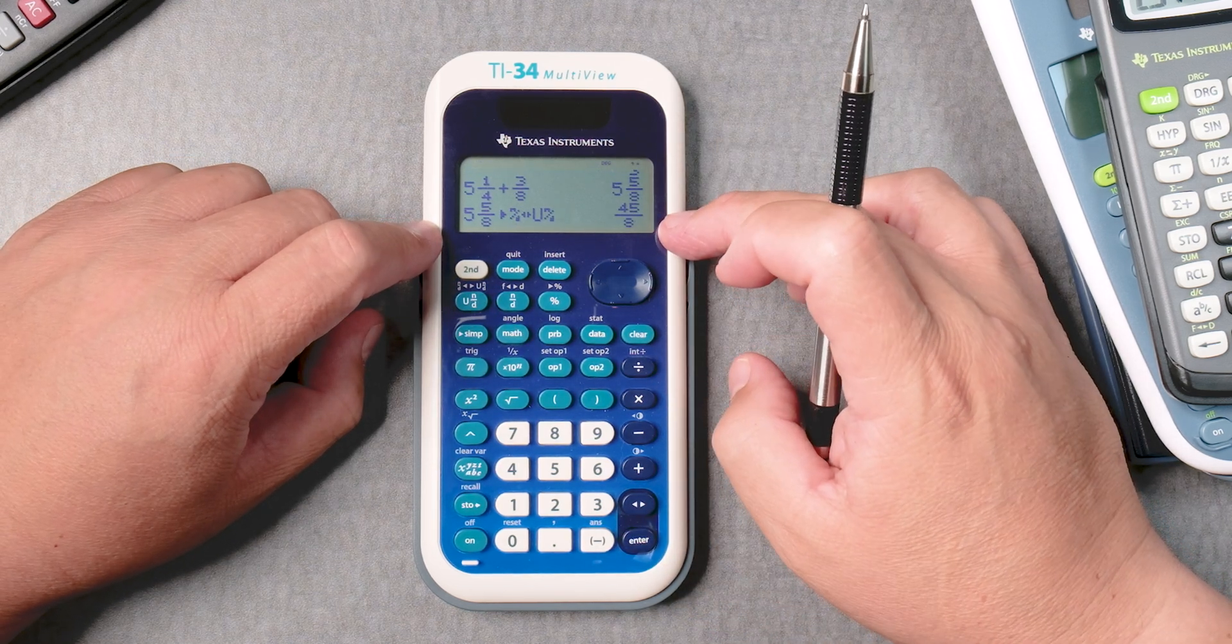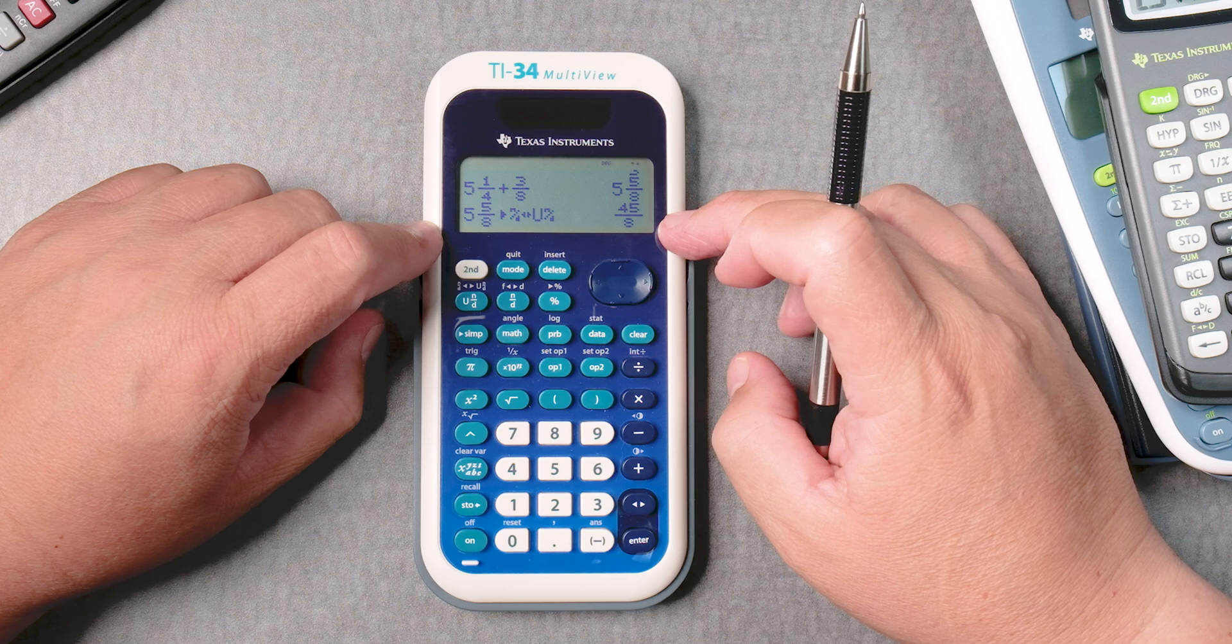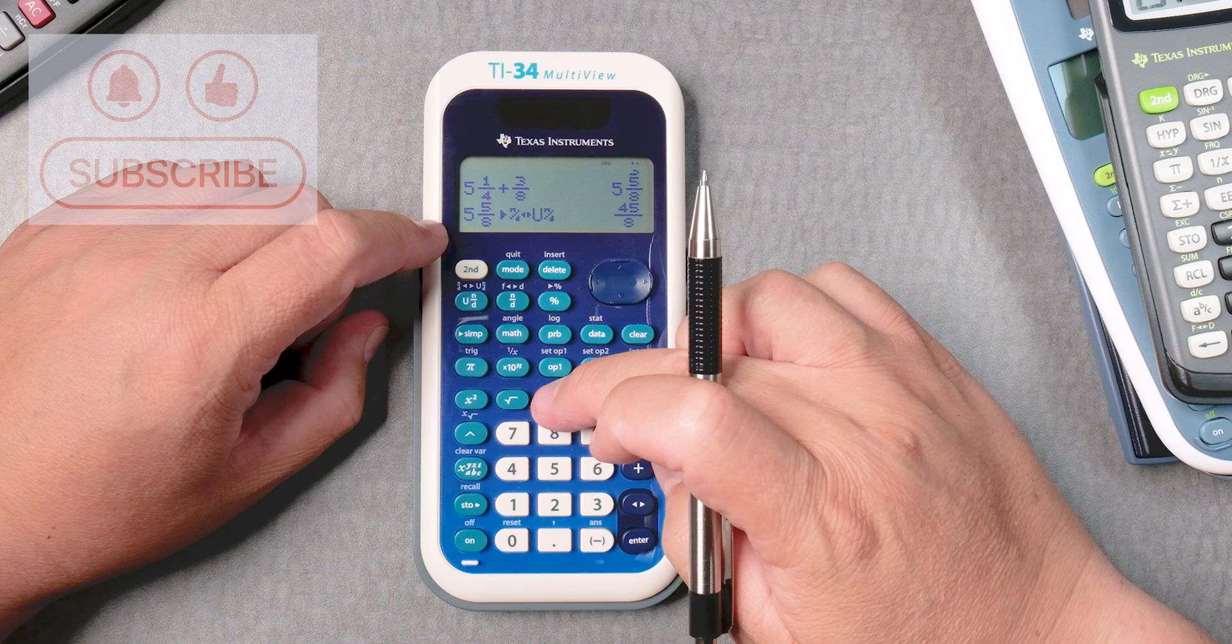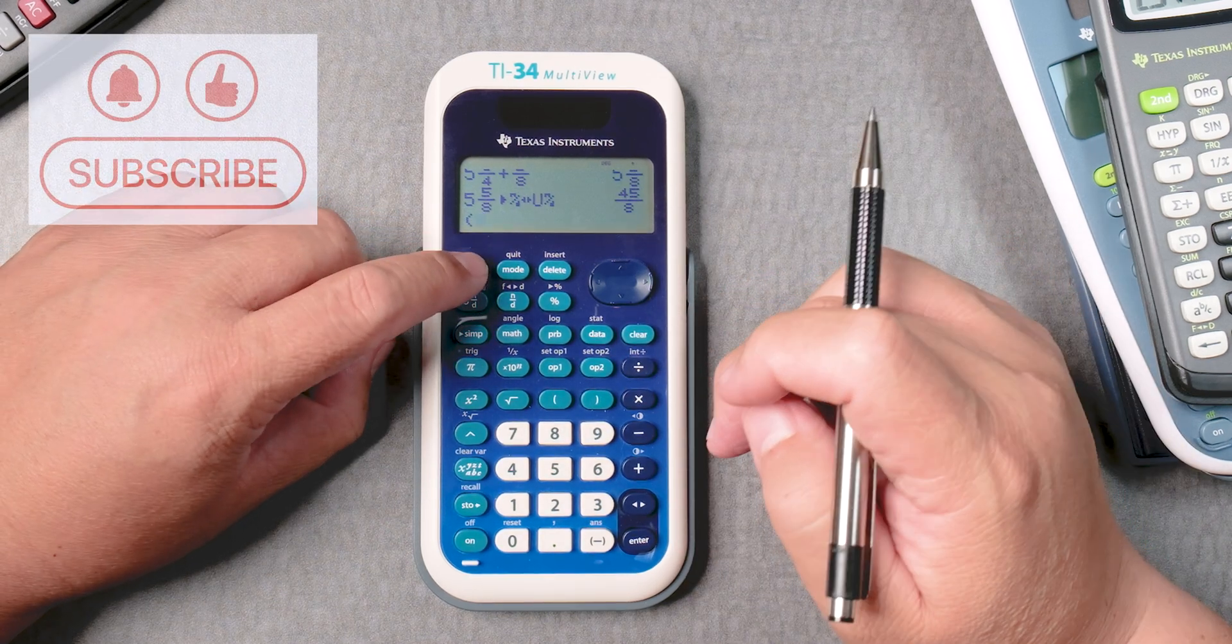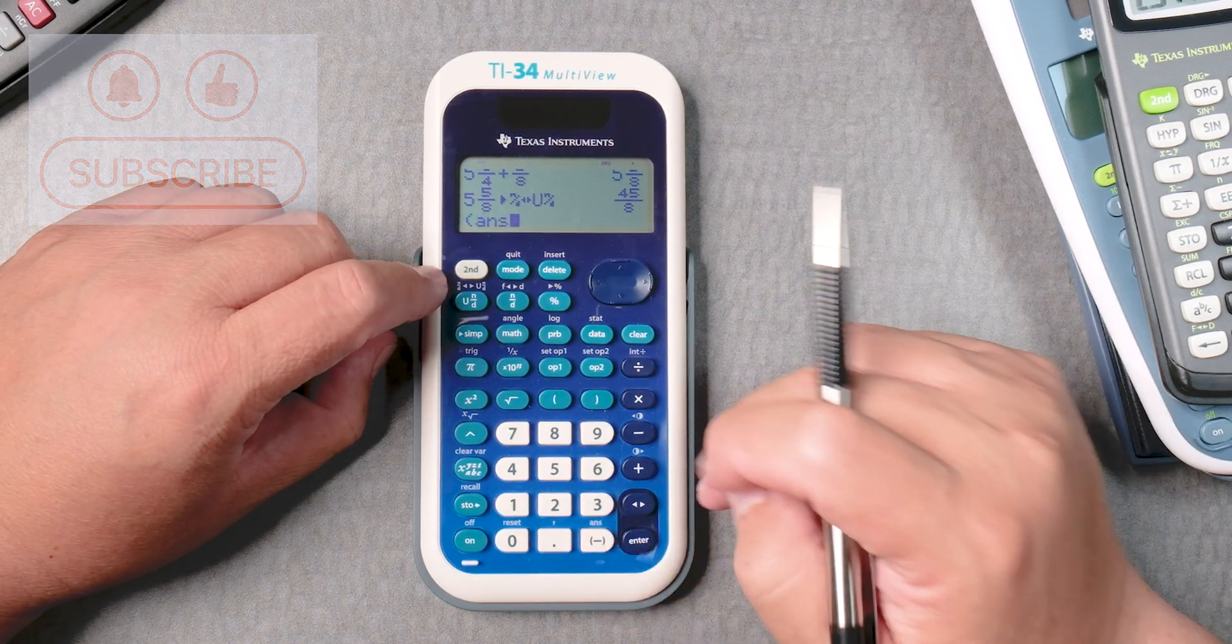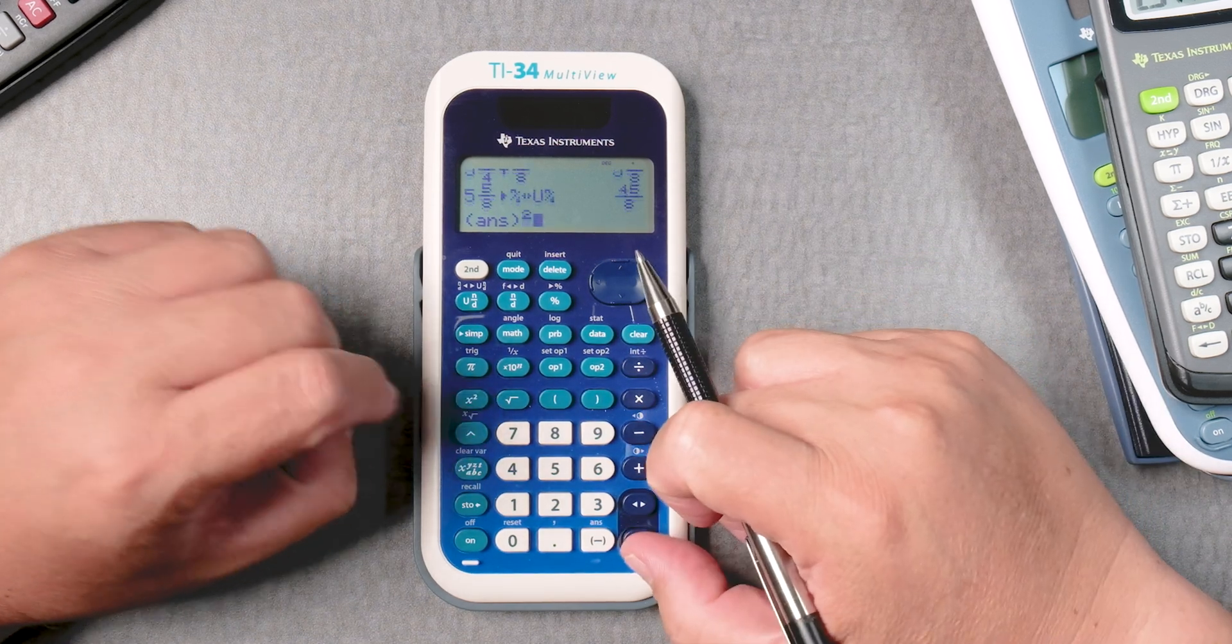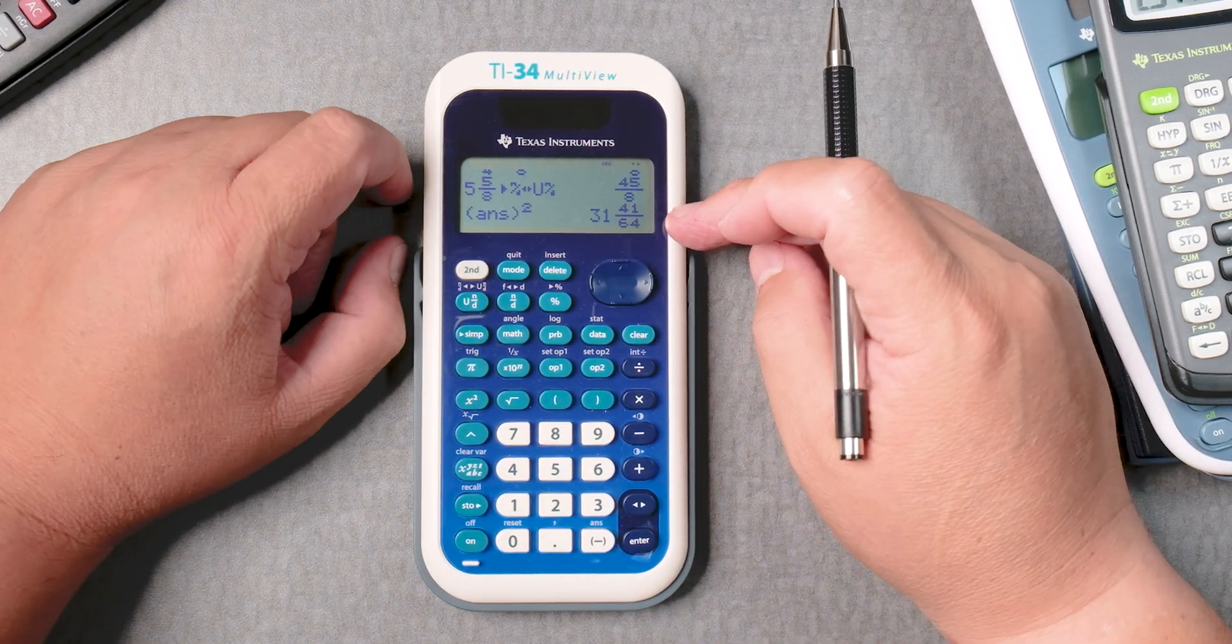You can take this answer, you can put parentheses, second, and then the negative button, the answer that you have, close it, and you can square it if you like, and it gives you a mixed number.